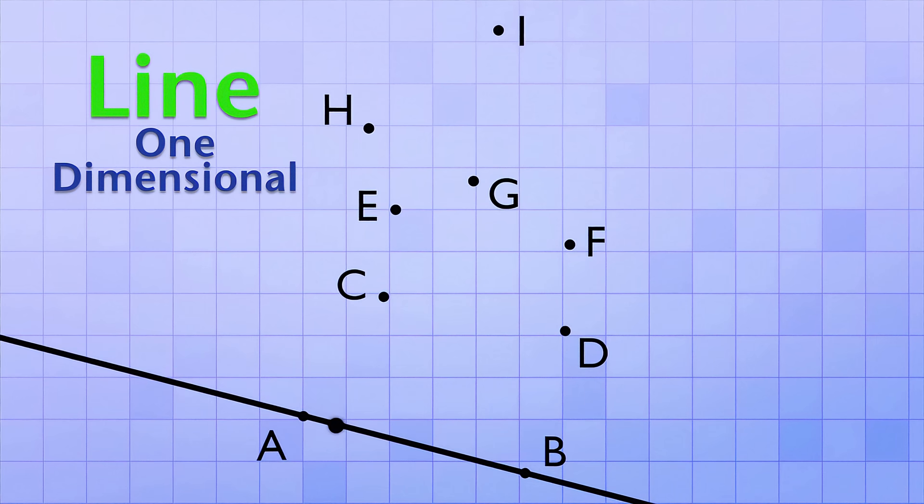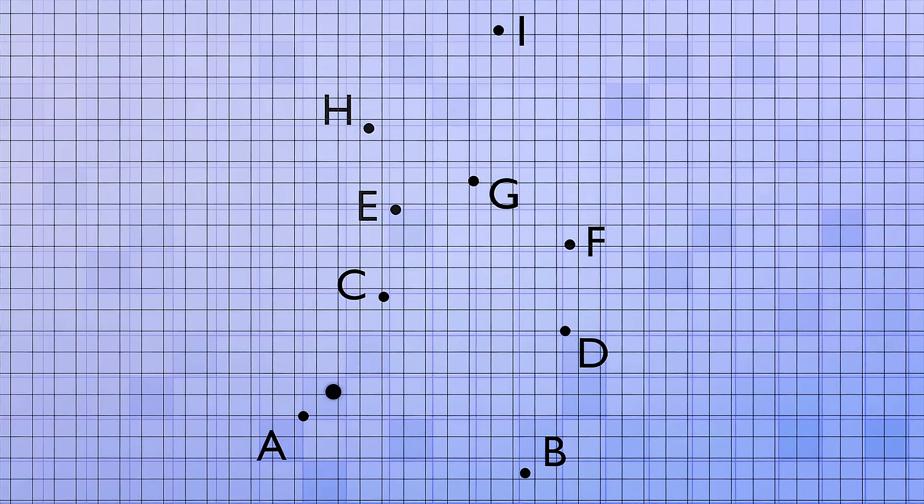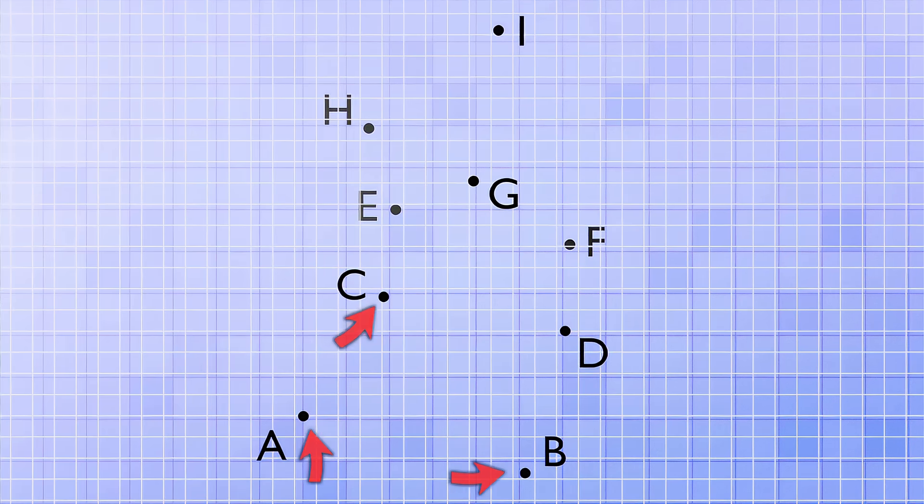You can't get to point C without going off of line AB. But if you're on a plane, a two-dimensional object, then you can get to point C, because point C is on the same plane as points A and B. All three of them are on that flat, two-dimensional surface, which is your computer screen.